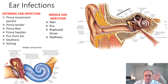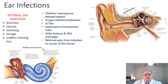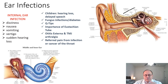When we have an inner ear infection, it can manifest as dizziness, nausea, vomiting, vertigo, and sudden hearing loss. The inner ear consists of the organ of sound and the organ of balance. So the organ of sound is knocked out and you get sudden hearing loss. You can have dizziness, nausea, vomiting, and vertigo if the organs of balance are affected.